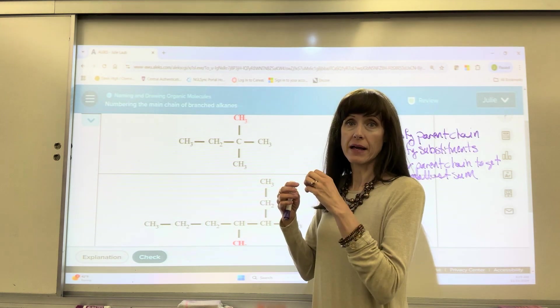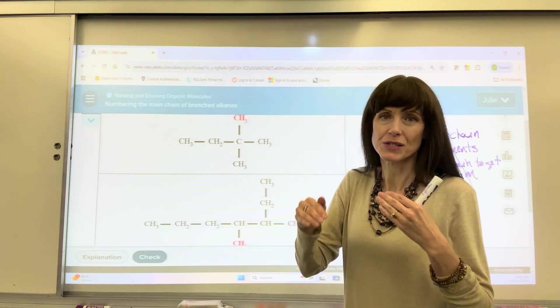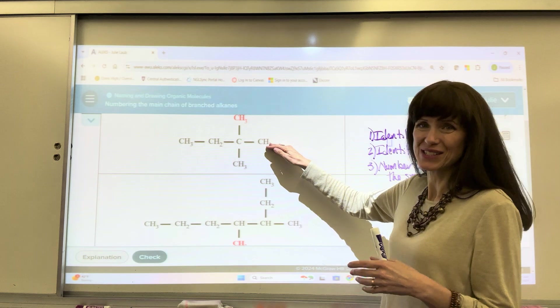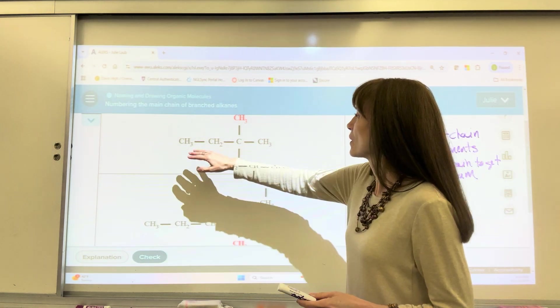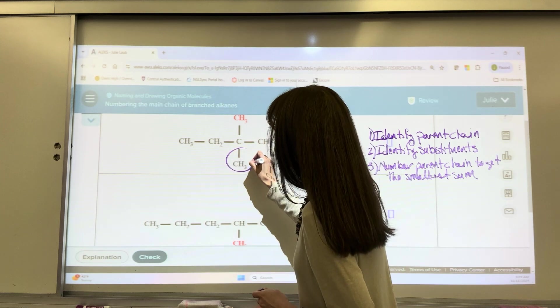Now I'm going to circle my substituents. So 4 is the longest. My brain, it just works a little bit easier if the longest chain, if it's straight, if that's an option, I always choose that one. So I'm going to have 1, 2, 3, 4.